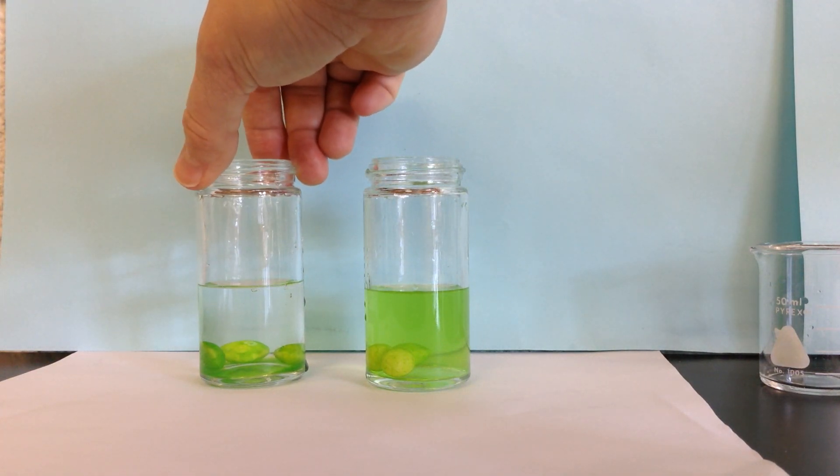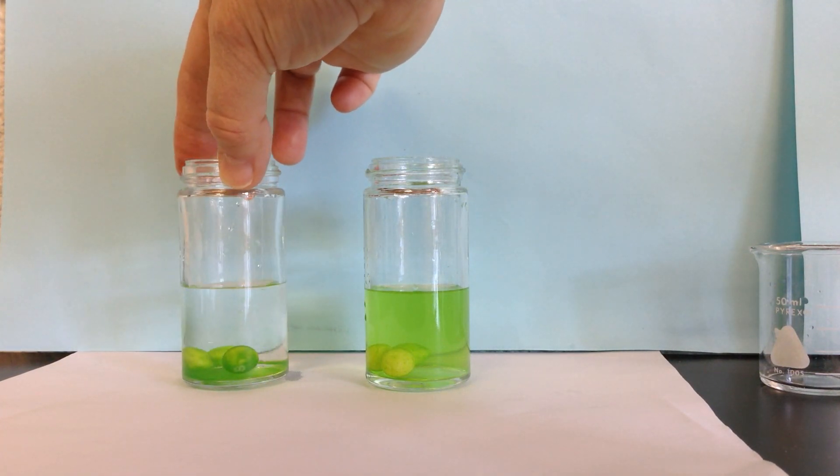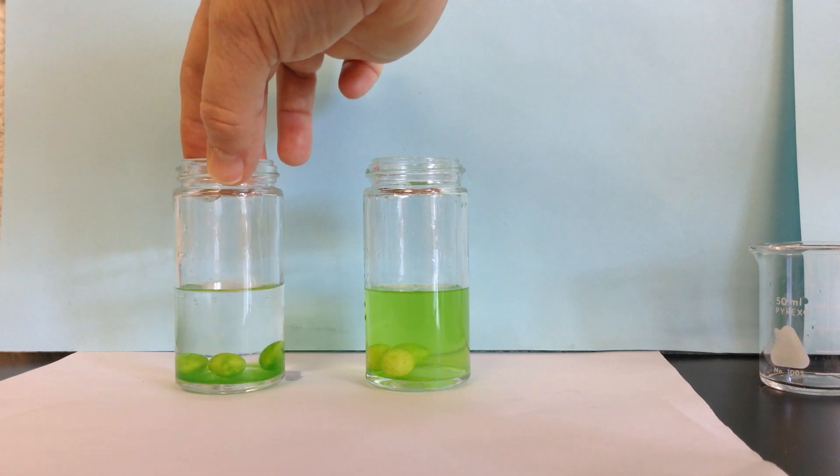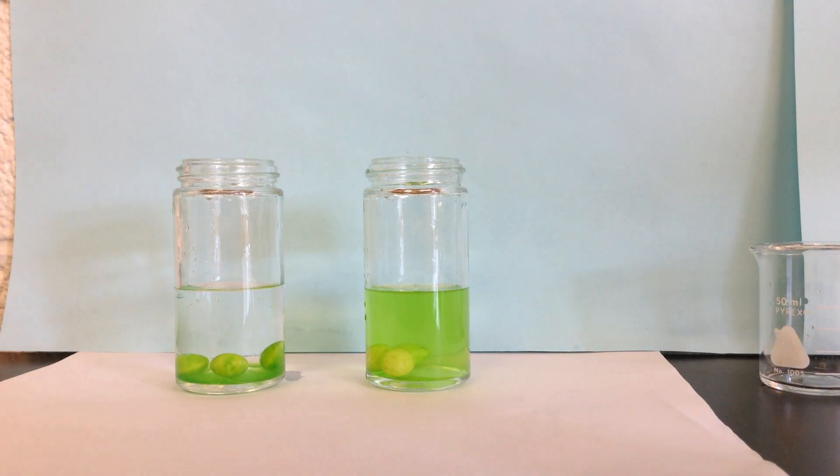And in this one it is dissolving but you can see that it's just sitting at the bottom. I wonder why it's sitting at the bottom like that. What is it about the Skittle coating that's making it sit at the bottom?